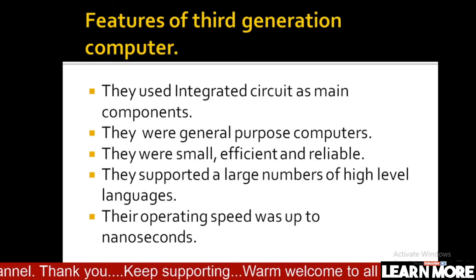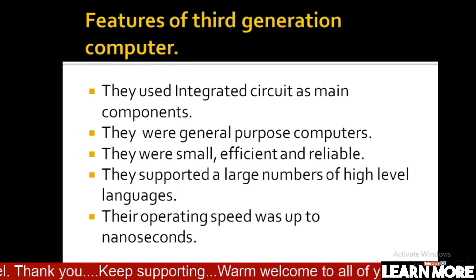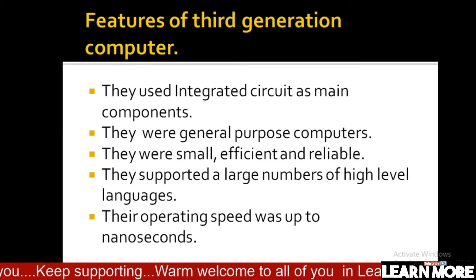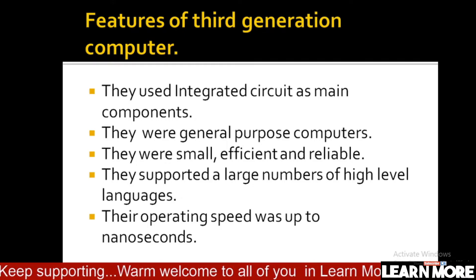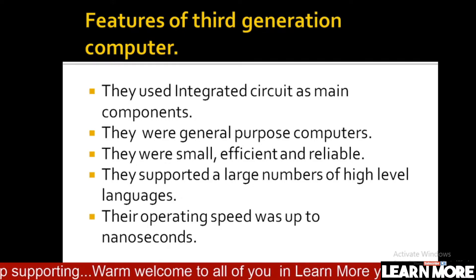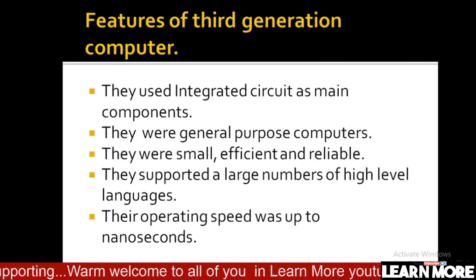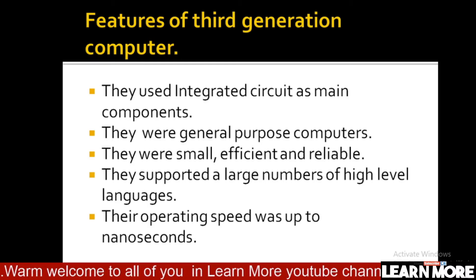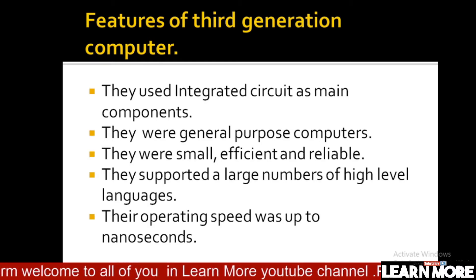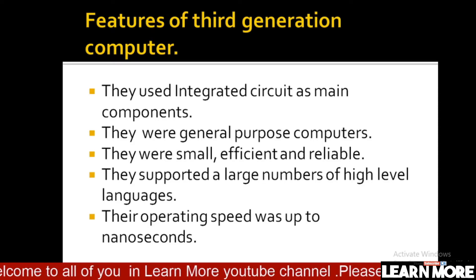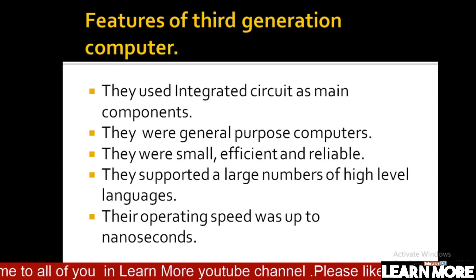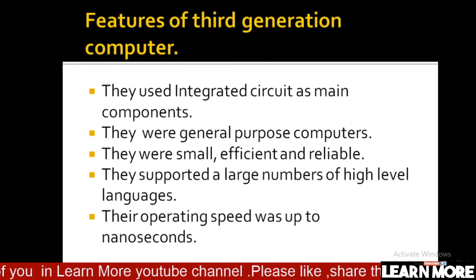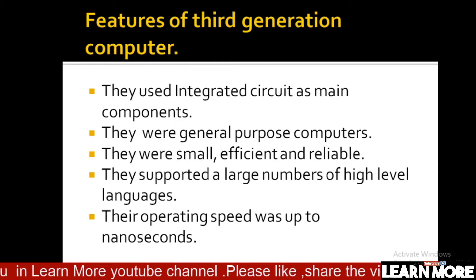Now, what are the features of third generation computer? They used integrated circuits as the main component. They were general purpose computers — small, effective, efficient, and more reliable than second generation computers. They supported a large number of high level languages, and their operating speed was up to nanosecond, making them faster than both first and second generation computers.